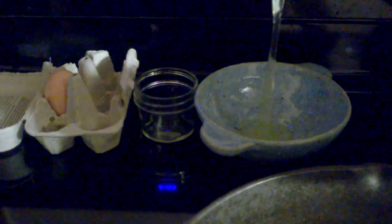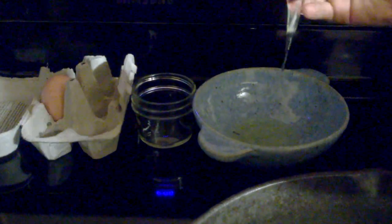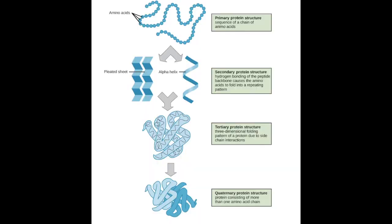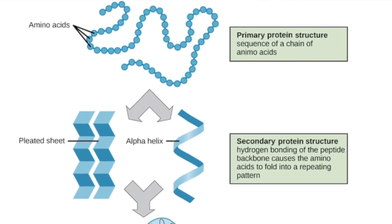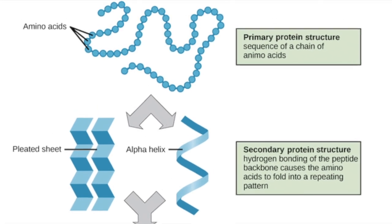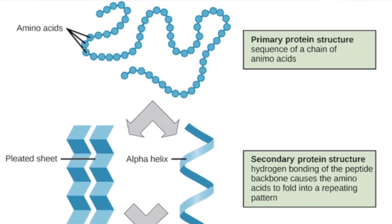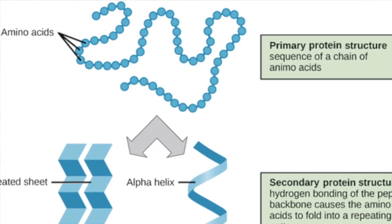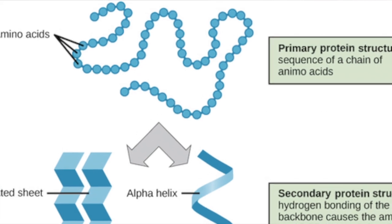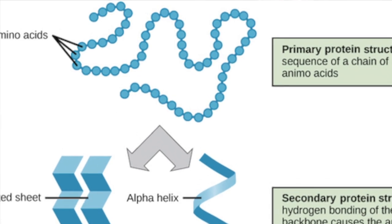Proteins are just a string of amino acids and they can have four levels of structure. Primary is just a chain of amino acids — we will think of amino acids as building blocks for right now.